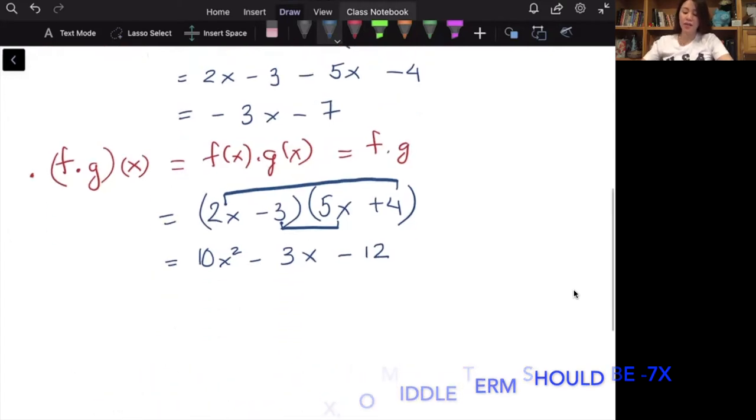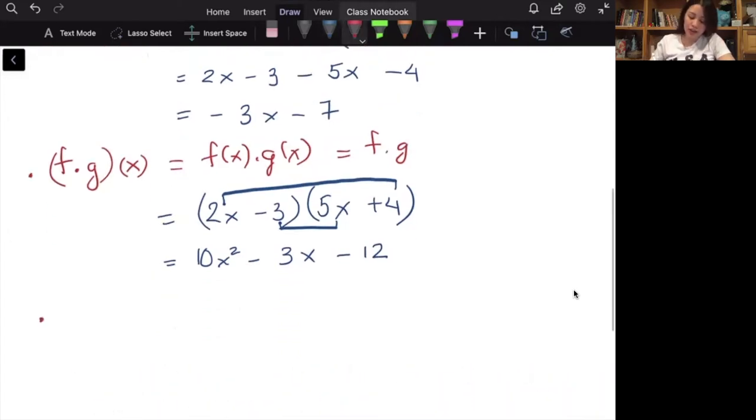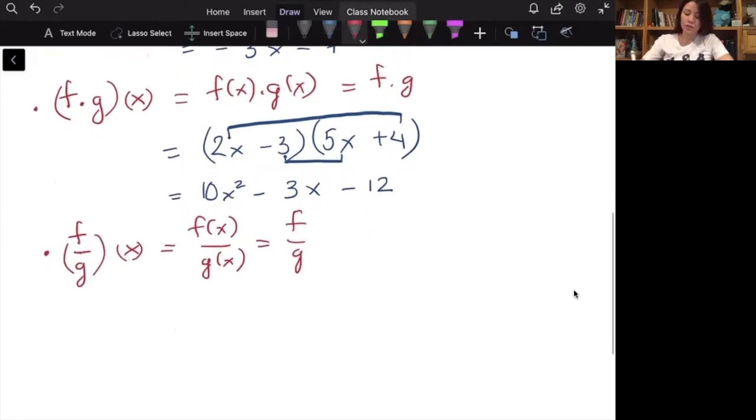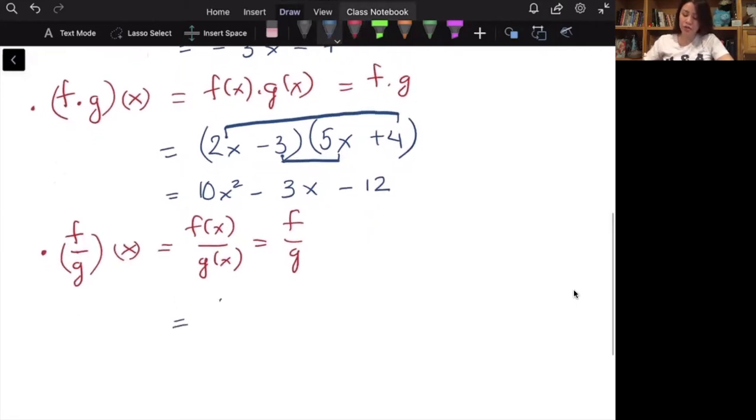And lastly, we can divide them. We can take f divided by g of x, or f(x) divided by g(x), or f divided by g for short. So this becomes, well, function f is 2x minus 3, and function g is 5x plus 4.